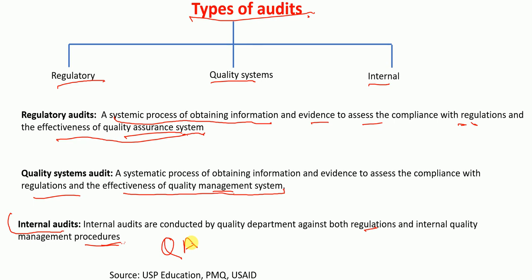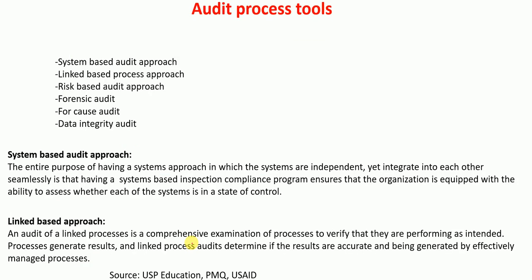So the three types of audits are: regulatory, quality systems, and internal. Now, the audit process tools — what are the different tools available for audit processing? These are: system-based audit approach, linked-based audit approach, risk-based audit approach, forensic audit, for-cause audit, and data integrity audit.